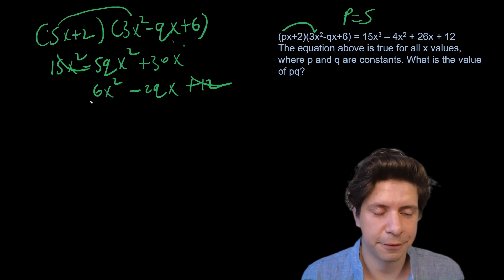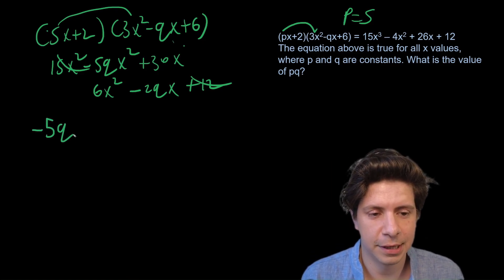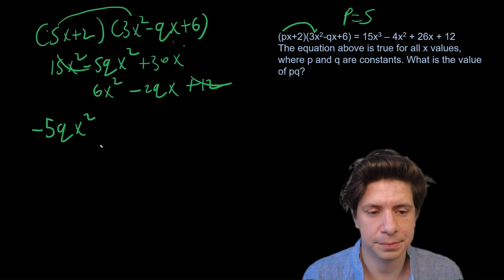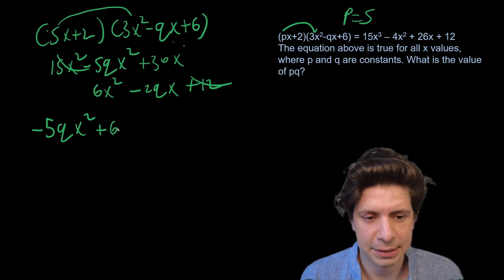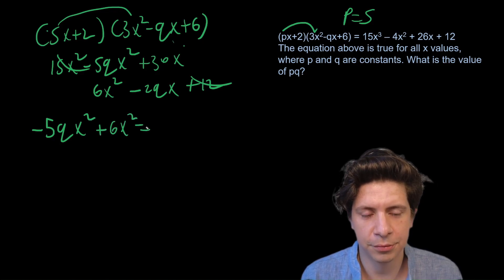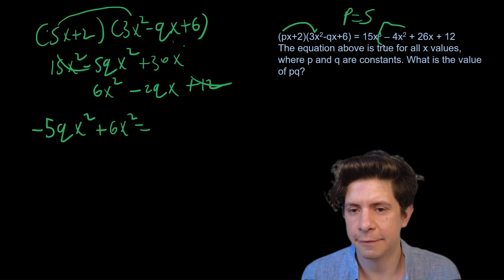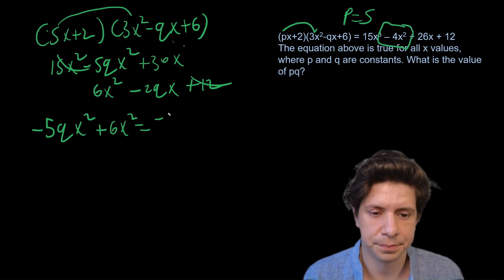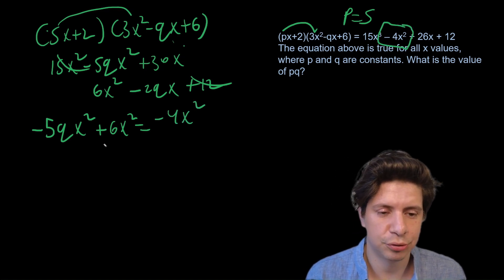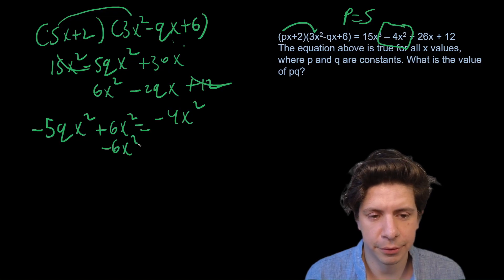Now, I'll do the square roots together first and then I'll do the other one to see how you could have done it either way. So I'll have -5qx² + 6x² equals the -4x² here. So we'll subtract 6x² from both sides.